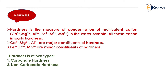Now what is hardness? Hardness is the measure of concentration of multivalent cations — that is calcium Ca²⁺, magnesium Mg²⁺, aluminium Al³⁺, iron Fe²⁺, strontium Sr²⁺, and manganese Mn²⁺ — in the water sample.